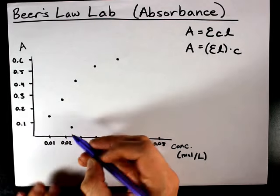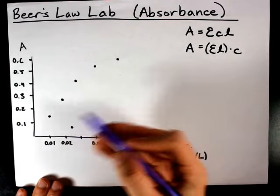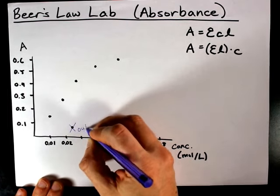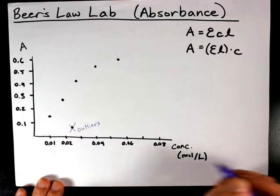Now, the first thing I want to point out is that if you have data points that are way out of line from all the others, you can ignore them because they are outliers and you will not have to worry about it.